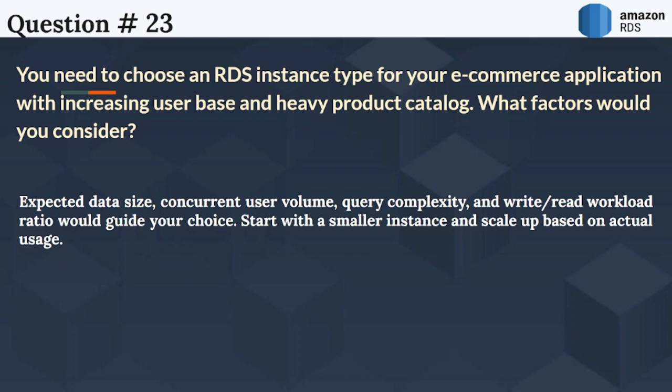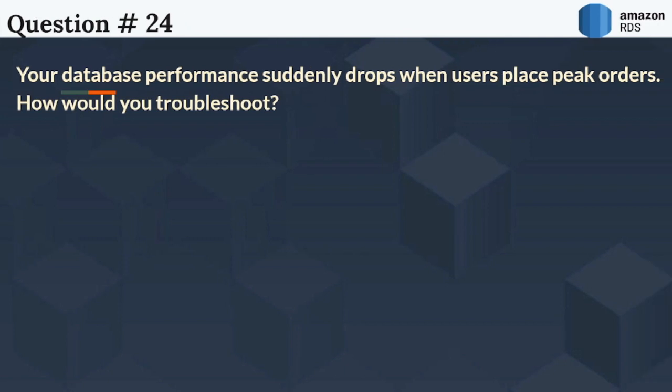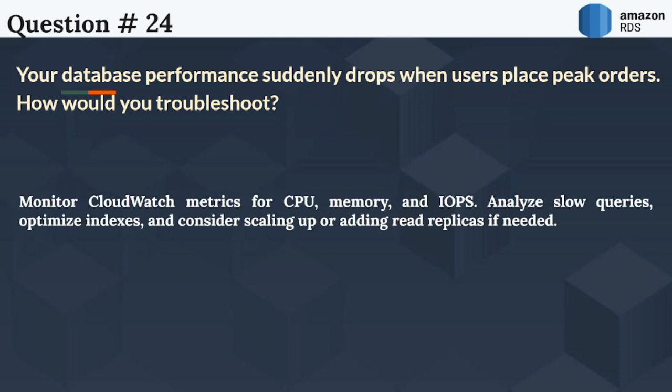The next question is: Your database performance suddenly drops when users place peak orders. How would you troubleshoot? Monitor CloudWatch metrics for CPU, memory, and IOPS. Analyze slow queries, optimize indexes, and consider scaling up or adding read replicas if needed.